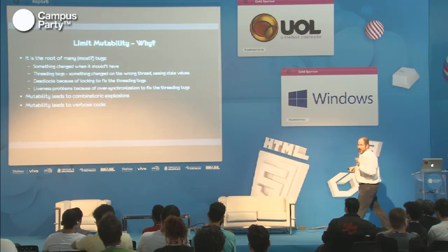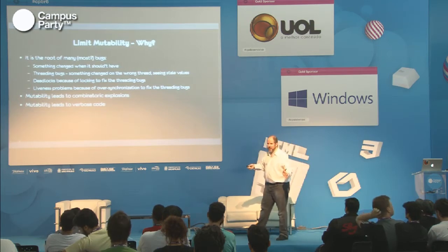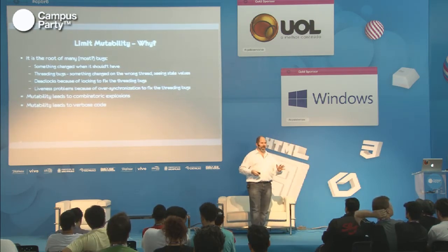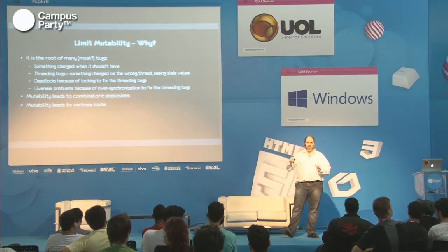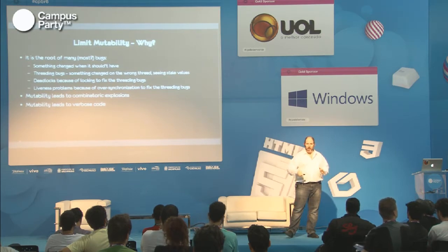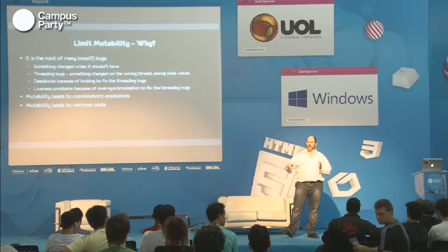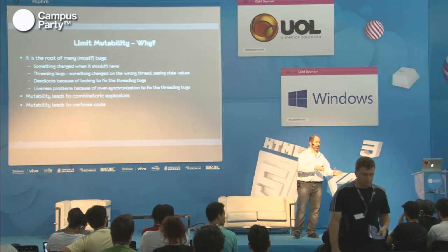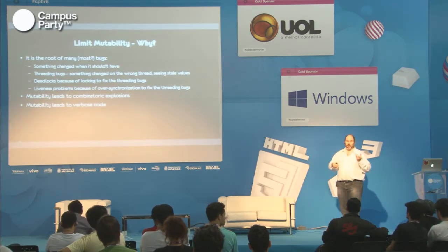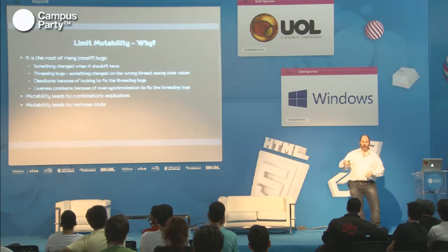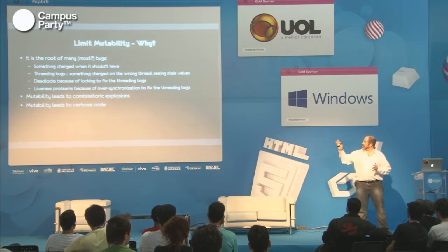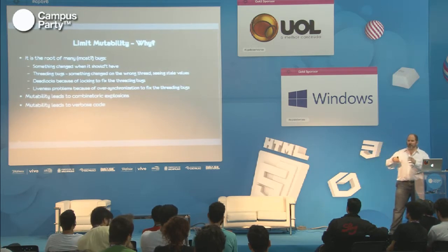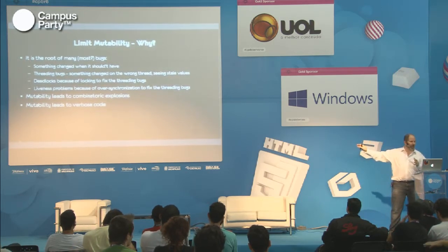The next thing is mutability. Mutability is when something changes — you have a setter, you can set a value, you can change a value. A huge source of bugs is things setting values at the wrong time, or bugs caused by people trying to protect themselves from problems of people setting things at the wrong time. We have an expression in English: 'for the want of a nail, a shoe was lost, and for the want of a shoe, a horse was lost, and for want of a horse, the war was lost.' Small things lead to big improvements in reliability.